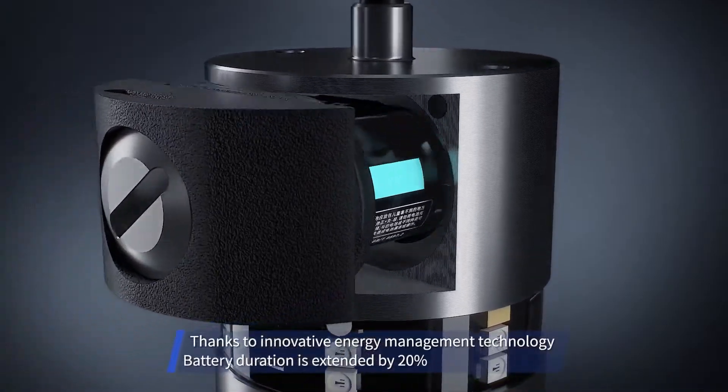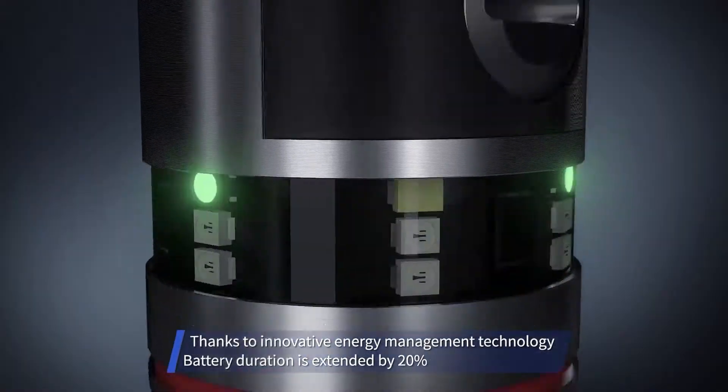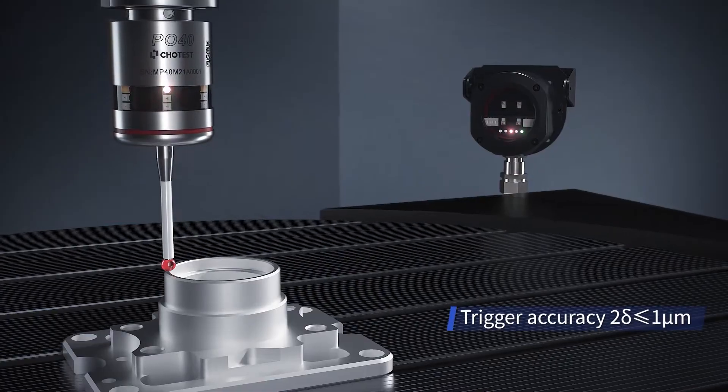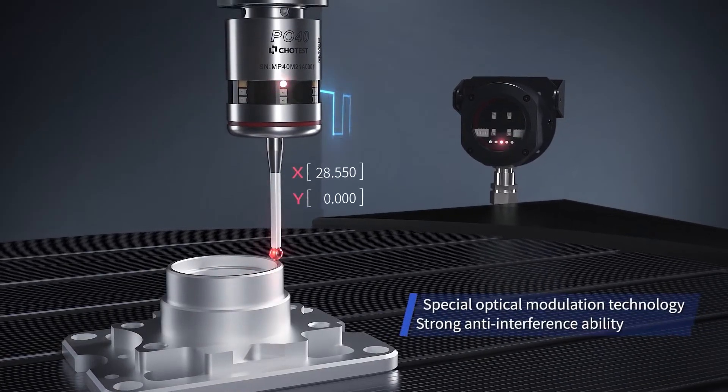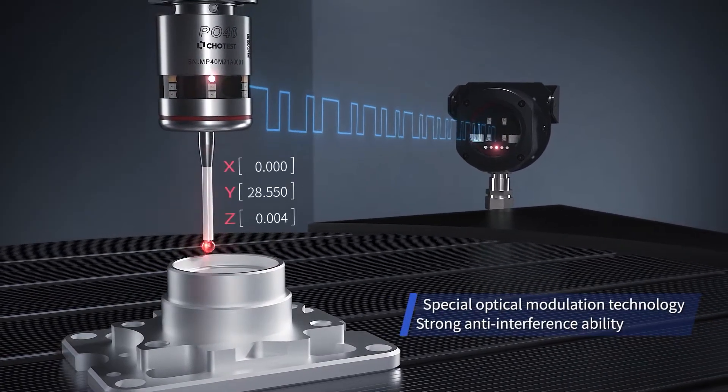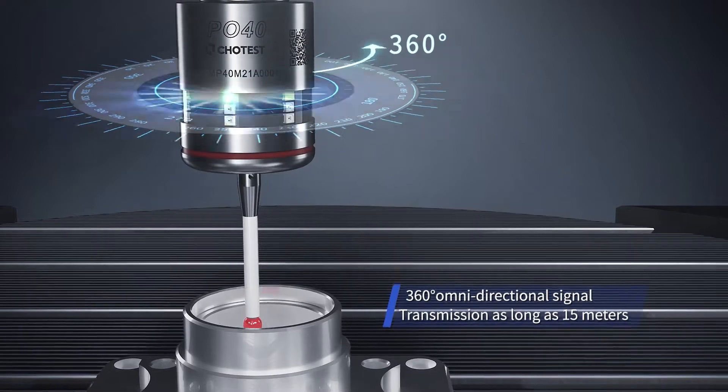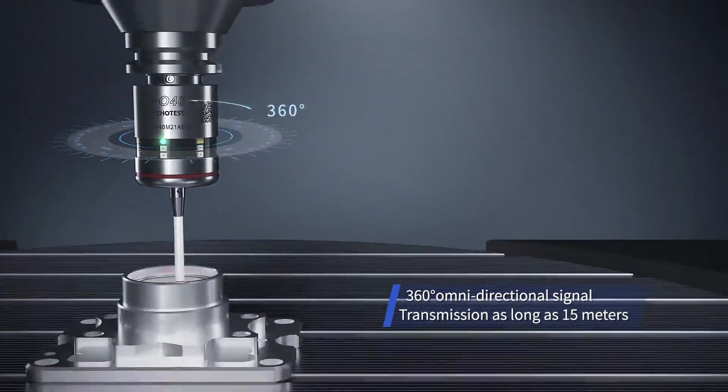Chotest machine tool probes have independent intellectual property rights and powerful functions. They can perform parts alignment, inline compensation, and post machining inspection during the manufacturing process, which is the guarantee for your stable production.